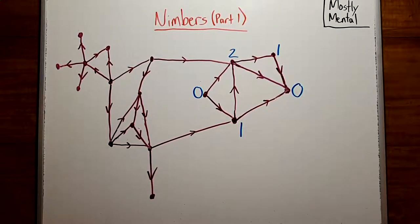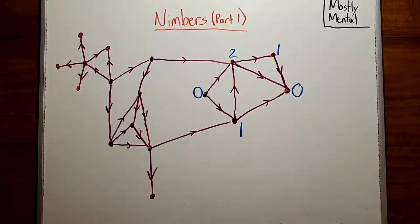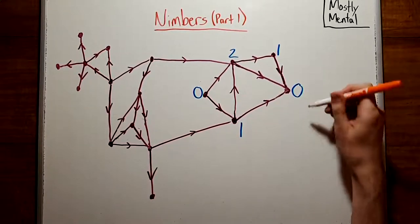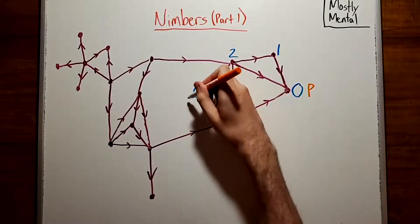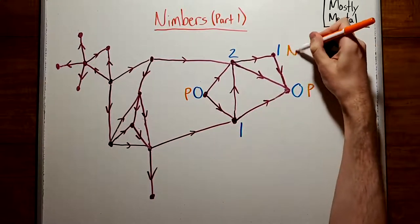As an exercise, see if you can fill in the Sprague-Grundy values for the rest of these positions. And this might feel a little bit familiar. In the last video, we defined P and N positions by which positions we could reach. And in fact, it's not too hard to see that the positions with value zero are the P positions.